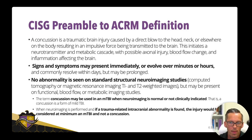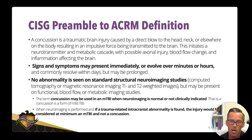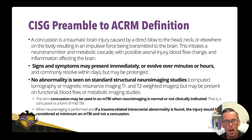The next part covers pathophysiology. A concussion initiates a neurotransmitter and metabolic cascade with possible axonal injury, blood flow changes, and inflammation affecting the brain. It's not always guaranteed — there's always a neurotransmitter and metabolic cascade, but there's possible axonal injury, blood flow changes, and inflammation affecting the brain.